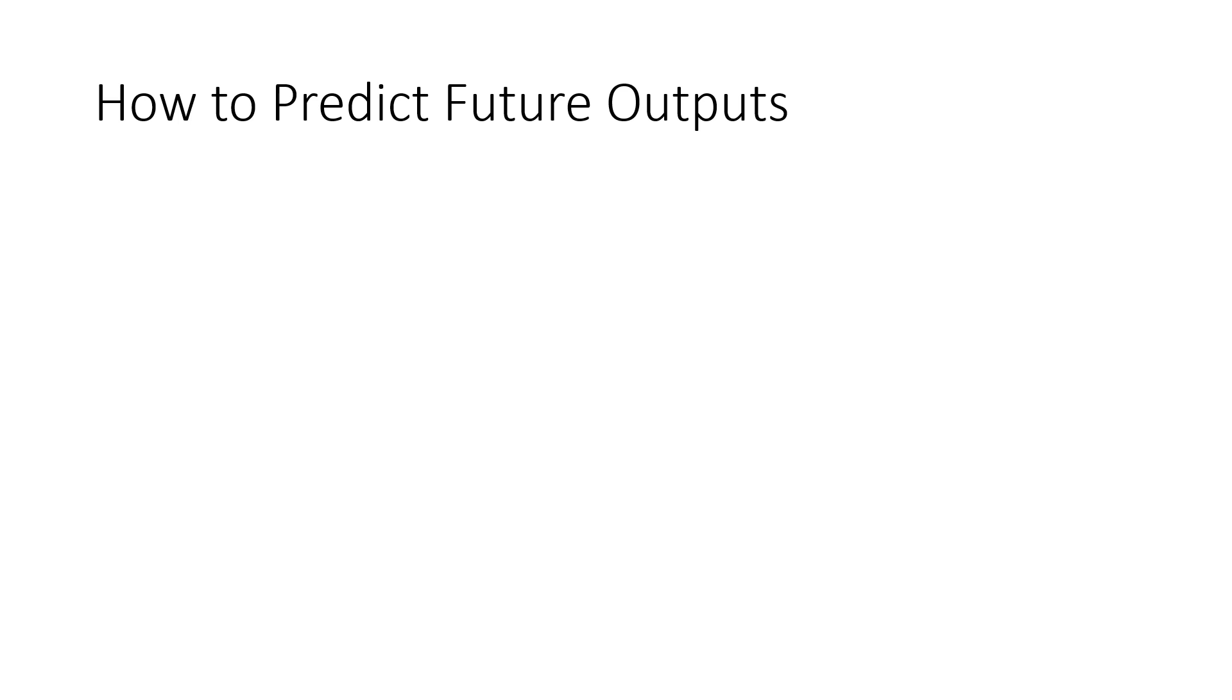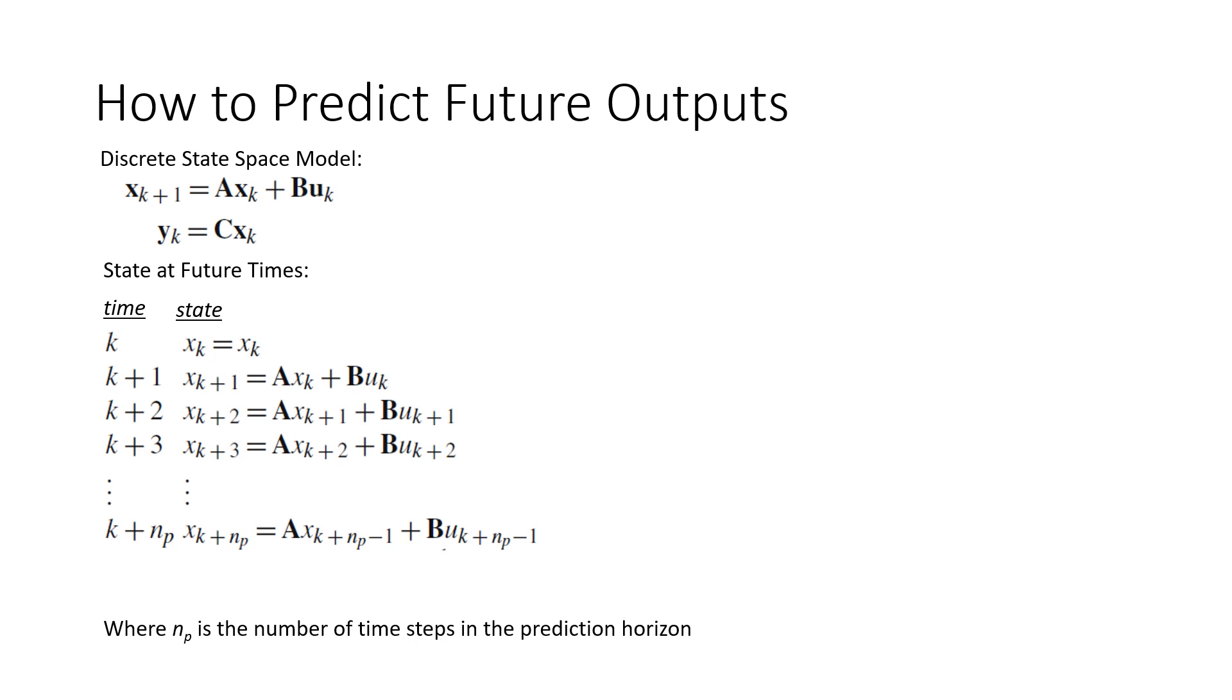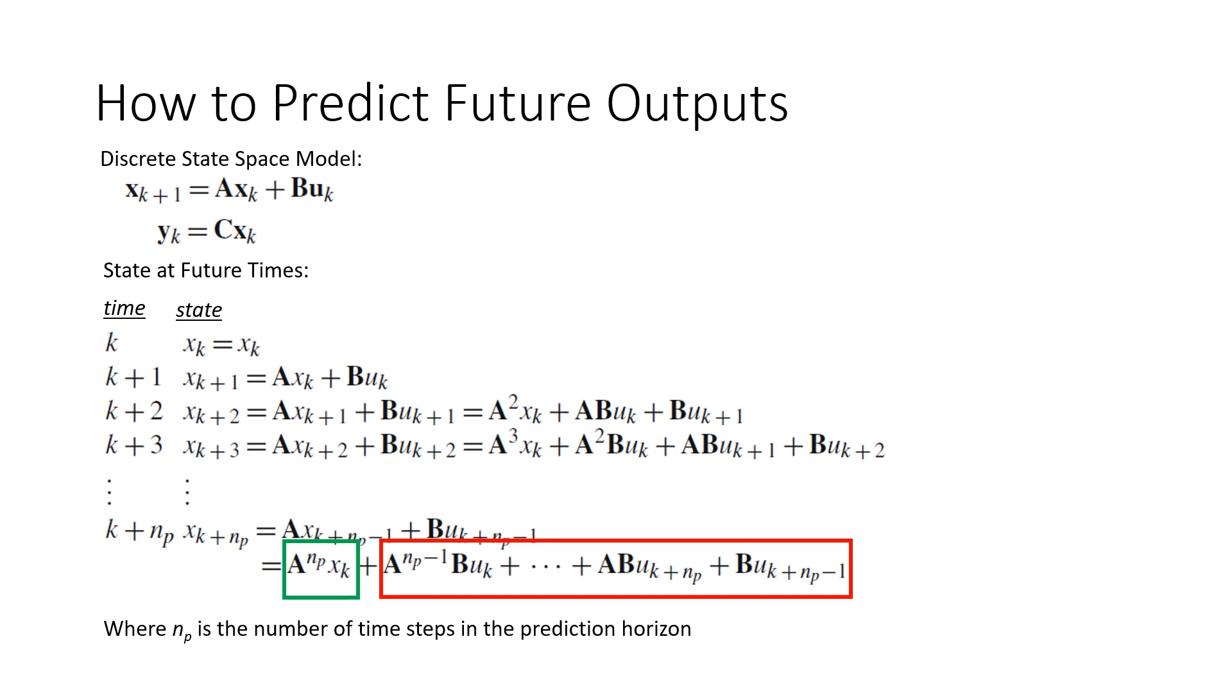Now let's go over how MPC or model predictive control works for a discrete linear time invariant system. Here is our state space model. For simplicity, let's assume the D matrix is 0. Using the state space model, let's solve for our states at future times, starting at time k. Here is the state at time k plus 1, k plus 2, and time k plus 3, all the way up to time k plus n_p, where n_p is the number of time steps in the prediction horizon. We can plug the equation from the previous state into the equation for the next state. We can do this all the way up to time k plus n_p. You can see that the state at any time is the A matrix to a power of the time step times the original state, plus all the future input times some A and B matrices.